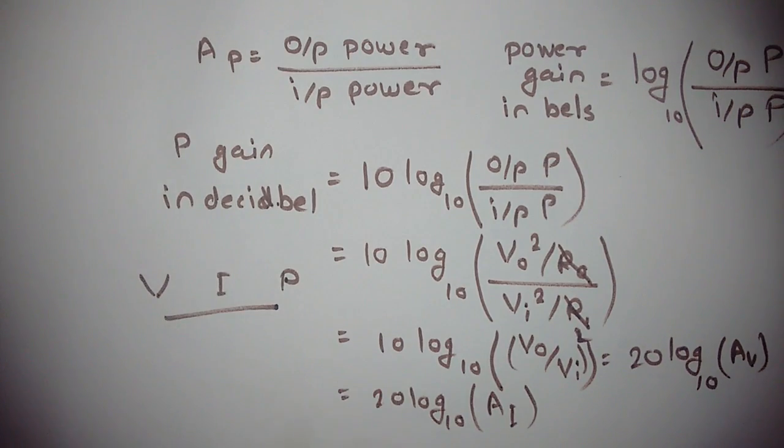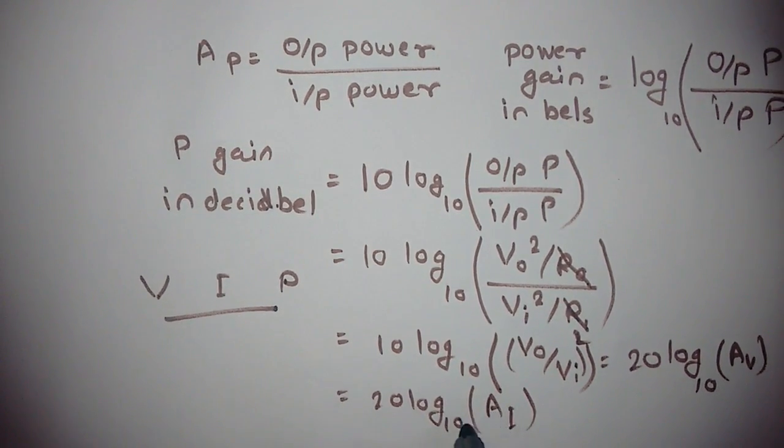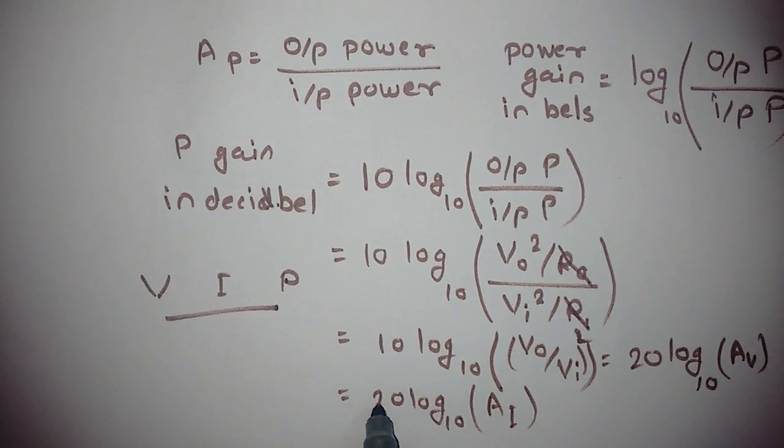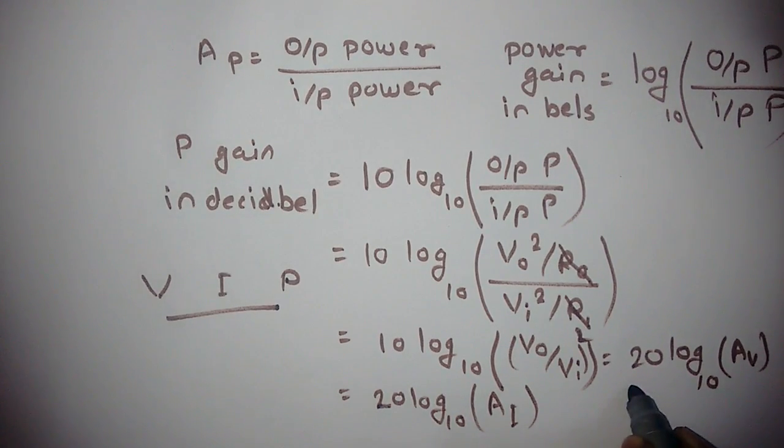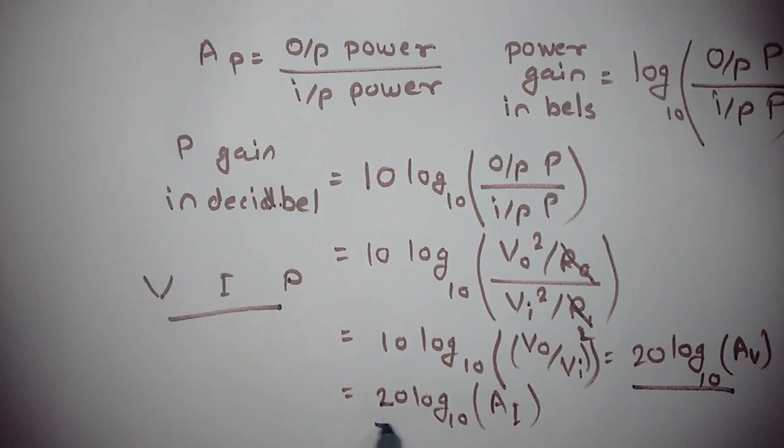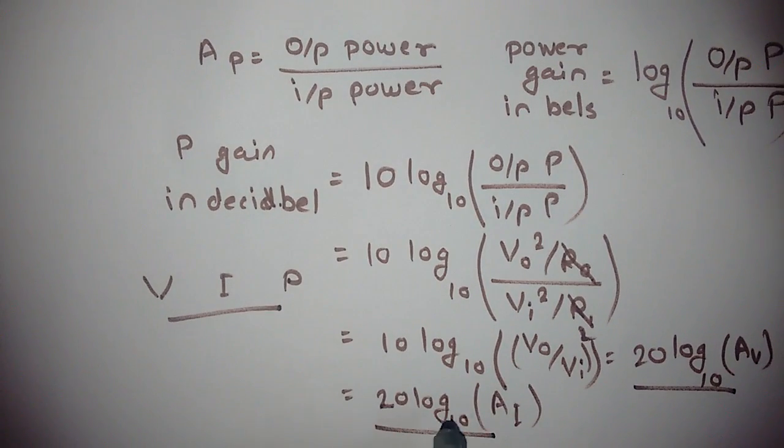So if they are not equal, we'll find that voltage gain is this, current gain is this, and power gain is this.